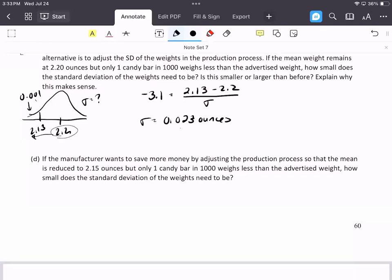Final one in this section is if the manufacturer wants to save money and is going to, by adjusting the production process, the mean is reduced to 2.15 ounces, but only one in a thousand candy bars is less than the advertised weight. How small does the standard deviation have to be? I'm guessing it's going to have to be even smaller because this 2.2 is now becoming 2.15. So please take a moment and work on solving that and then come back and check your answer. Now, we can see that's a really small standard deviation. It may not even be achievable, but in this case, we're going to go with it. It makes sense. It's even smaller. We're squeezing that standard deviation even more because, once again, we want to have very few that are under the advertised weight, but we're also tightening up the standards, getting the advertised weight closer to the weight that the machine is being set at. Therefore, to keep a really small amount in the tail, we have to have a very, very small standard deviation.